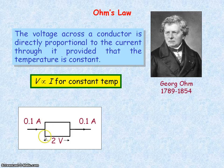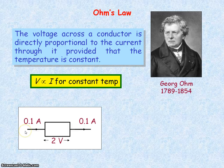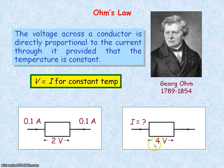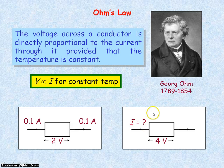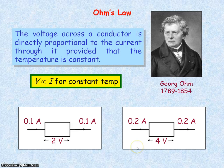If we have a resistor and it has two volts across it and a current of 0.1 amps through it, if we were to double the voltage across that resistor, then the current through it would also double, as the voltage is directly proportional to the current. This assumes that the temperature has remained the same.